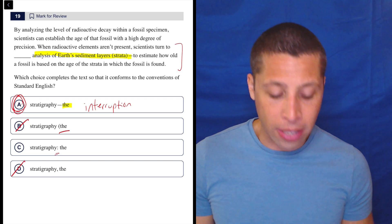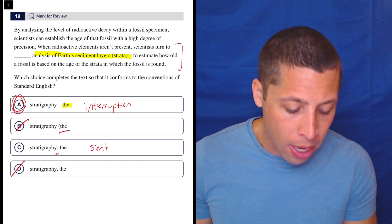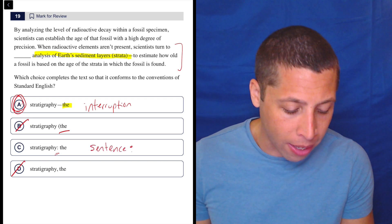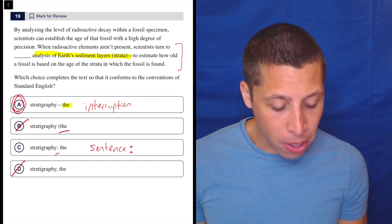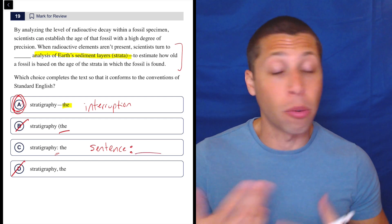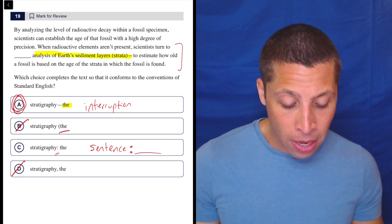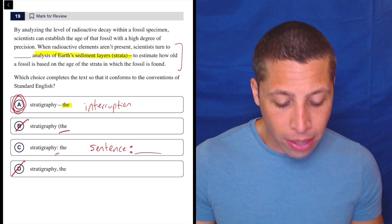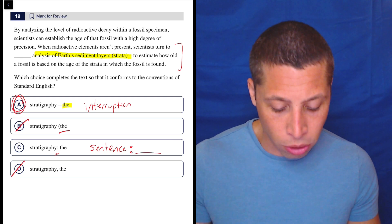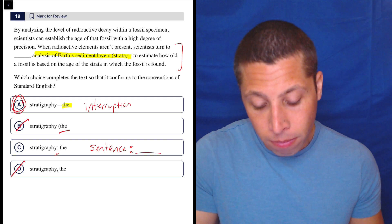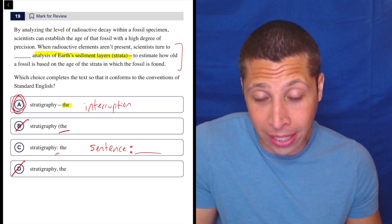And then the colon is very terrible here. In order to use a colon, we need a complete sentence beforehand. Then the colon is basically acting like a period before we add on some extra piece, either another sentence or another clause. It's basically like the sentence is over. So we can kind of listen for that. When radioactive elements aren't present, scientists turn to stratigraphy. We could end the sentence there. Like that is a complete sentence.